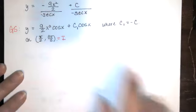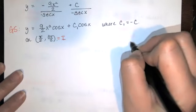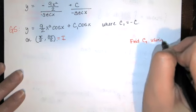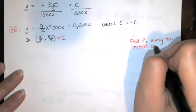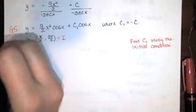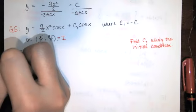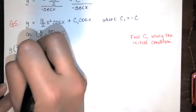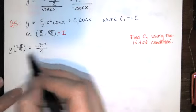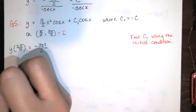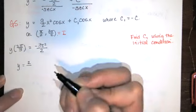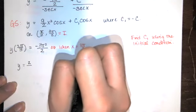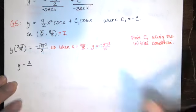Now we find the value of c₁ to get the particular solution. We use the initial condition: y(2π/3) = −3π²/2. This means when x = 2π/3, y = −3π²/2. We substitute x = 2π/3 into the general solution and simplify.